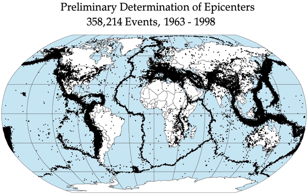The objective of earthquake engineering is to foresee the impact of earthquakes on buildings and other structures, and to design such structures to minimize the risk of damage. Existing structures can be modified by seismic retrofitting to improve their resistance to earthquakes. Earthquake insurance can provide building owners with financial protection against losses. Emergency management strategies can be employed by a government or organization to mitigate risks and prepare for consequences. Individuals can also take preparedness steps like securing water heaters and heavy items, locating shutoffs for utilities, and being educated about what to do when shaking starts. For areas near large bodies of water, earthquake preparedness encompasses the possibility of a tsunami caused by a large quake.